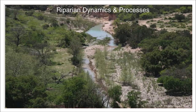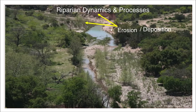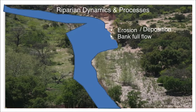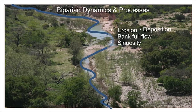Riparian areas are dynamic. Many different processes occur simultaneously, especially during flooding. Here we will introduce a few of the processes and build on our riparian vocabulary. Erosion and deposition are important balancing forces at work in a river. Bank full flow, as described previously, fills the channel.